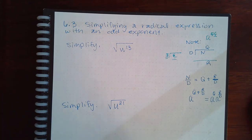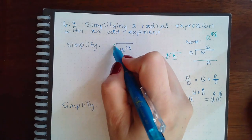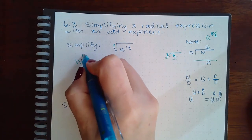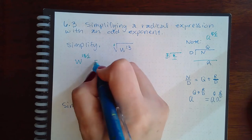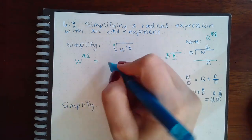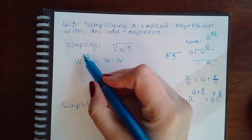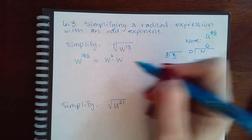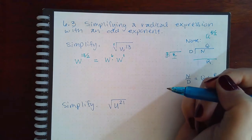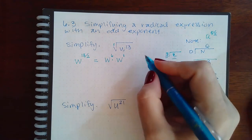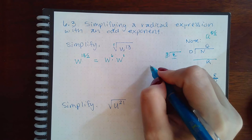We're going to take this with an index of two, w to the 13 over 2. How many times does two go into 13? Two goes into 13 six times with one left over.